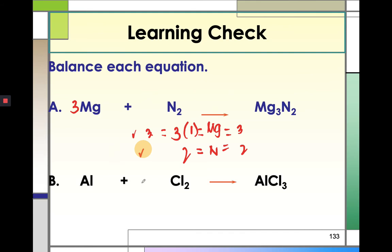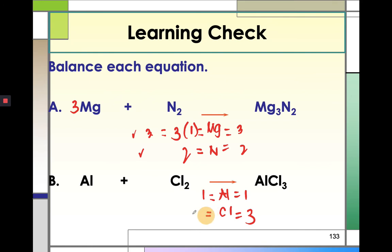For the next example, Al reacting with Cl2 to form AlCl3. Let's list down the elements: Al and Cl. In the product side, there is one aluminum atom and three chlorine atoms. In the reactant side, there is one aluminum atom and two chlorine atoms. To make them equal, we can interchange these values as factors — placing 3 before Cl2 and 2 before AlCl3, giving us six chlorine atoms on both sides.